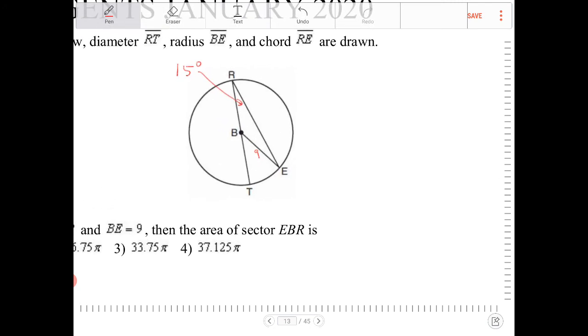So this being 15 degrees, therefore, this angle over here must also be 15 degrees, because BE and BR are radii, right? They are the radius of the circle there. Both of these measure 9 in length.